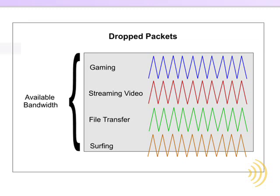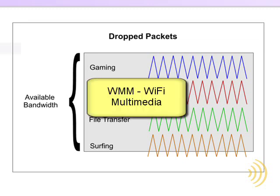Generally speaking, QoS falls under two categories: wired and wireless. Wireless QoS involves something called Wi-Fi Multimedia, or WMM. WMM automatically prioritizes video, music, and gaming applications over other typical web surfing activities. The only real option we have with WMM is to either enable it or disable it. The major caveat with WMM is it's only effective with devices that support it.